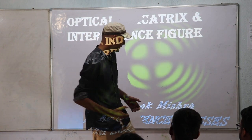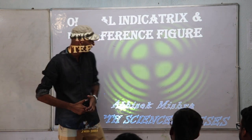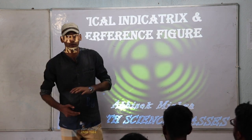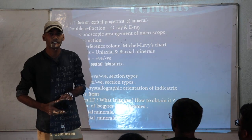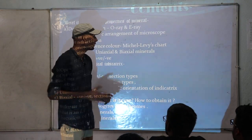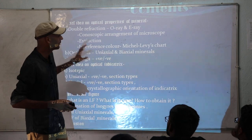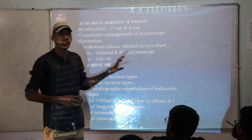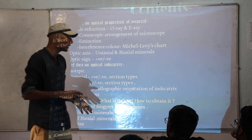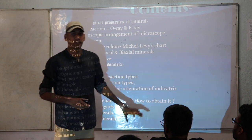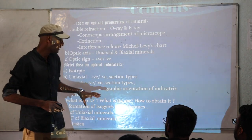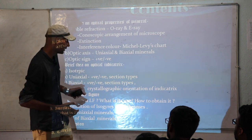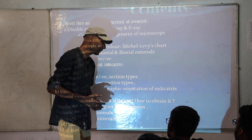Hello everyone. This is Abhishek Mishra from Artsai discusses Keonjar. We are going to discuss regarding Indicatrix and Interference figure. Before going to that, we will discuss some basic concepts of optical mineralogy like double diffraction, extinction, and interference. Then we will go for Indicatrix of different types of minerals like uniaxial and biaxial, the interference figures of different minerals, what is the use of interference figure, and the optic sign determination of different types of minerals.